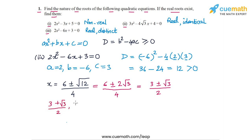The two roots are (3 + √3)/2 for the plus sign and (3 - √3)/2 for the minus sign. So the final answers are: in part 1 we have non-real roots, in part 2 we have real and identical roots, and in part 3 we have real and distinct roots.